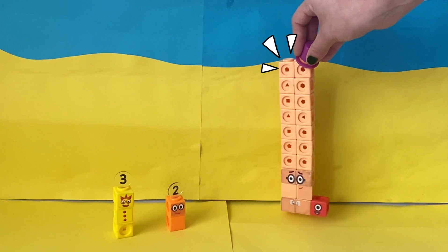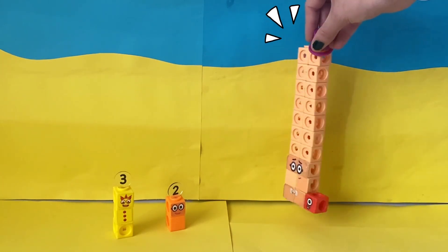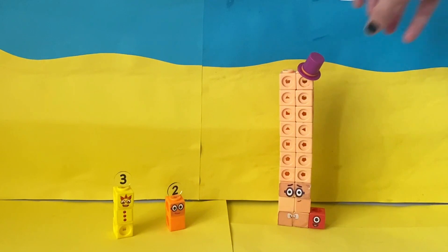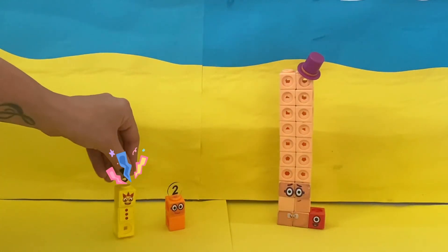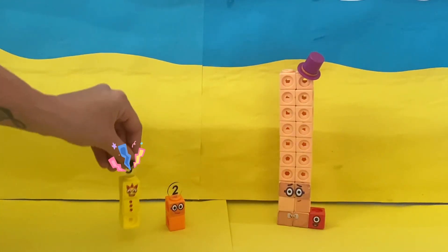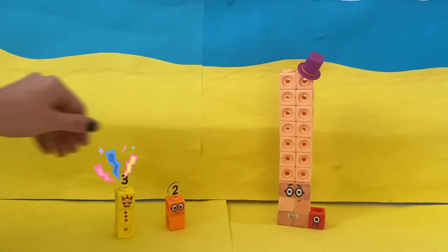Sometimes it's easier to think of bigger numbers as two numbers together. 21, 21, 20 and 1. Oh! I see!